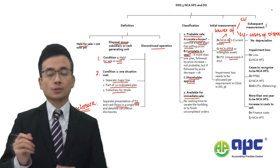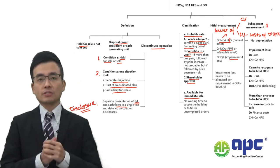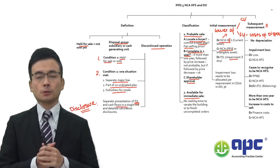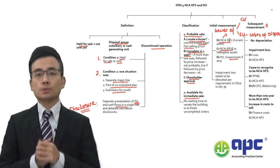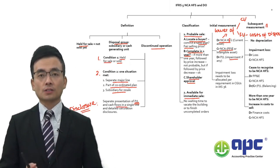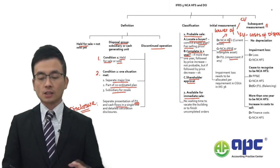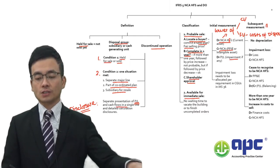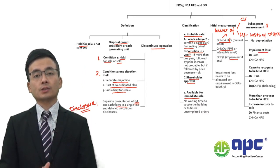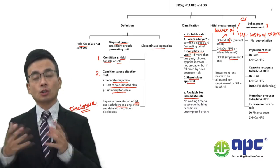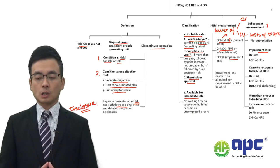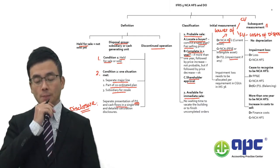For subsequent measurement, similar to the investment property fair value model, there should not be any further depreciation on a non-current asset held for sale, because it no longer relates to PP&E — it relates to a current asset. Any subsequent impairment losses still need to be charged. If we find that the non-current asset is subject to further impairment, we still need to recognise that loss.